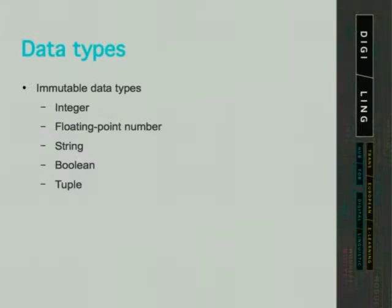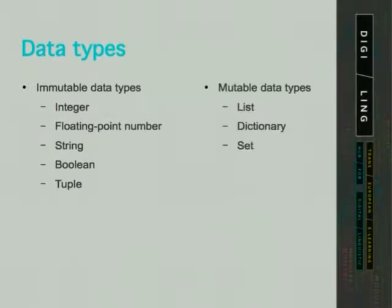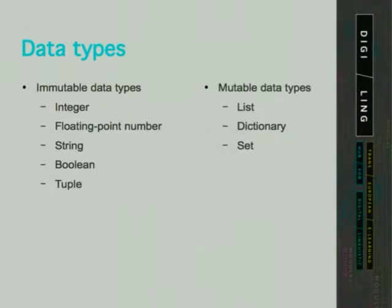Immutable built-in data types in Python are integers, floating point numbers, strings, booleans, and tuples. Mutable data types are lists, dictionaries, and sets. This means that every time we modify an integer or a string, Python perceives this as if we created a new object. But when we modify a list or a dictionary, Python perceives this as if we only updated the same object.